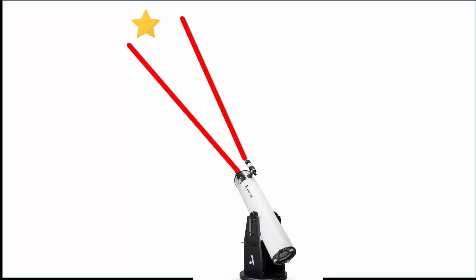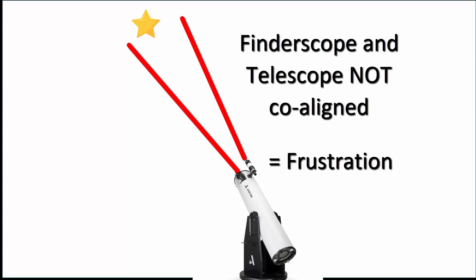So if the optical axis of the finder scope and main telescope are not aligned parallel, they will each point to a different patch of the sky and you will never be able to get the main telescope pointed at the patch of sky you were seeking in the finder scope.